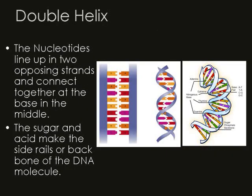The double helix is like a twisted ladder. It is made up of nucleotides. Along the outsides are sugar and phosphate groups, which run in opposite directions on either side. The rungs are made up of nitrogen bases that have very specific base pairs.